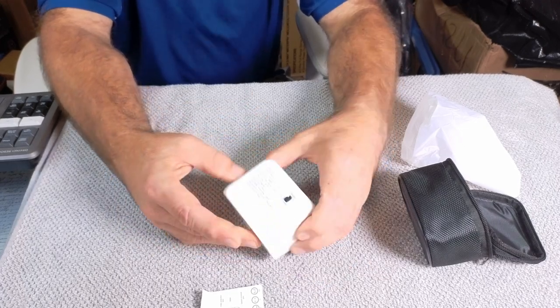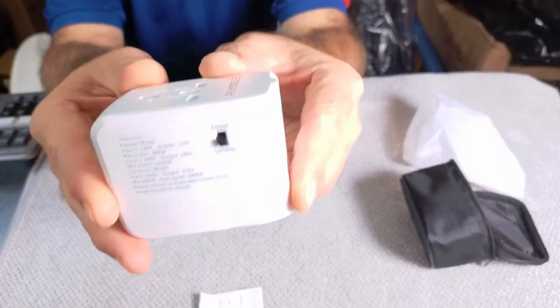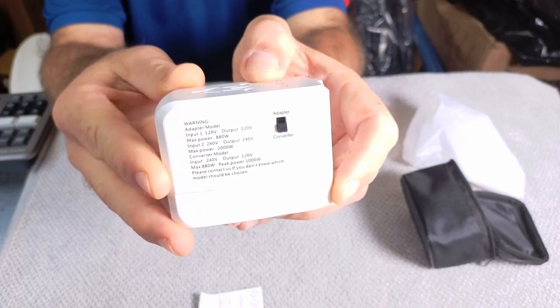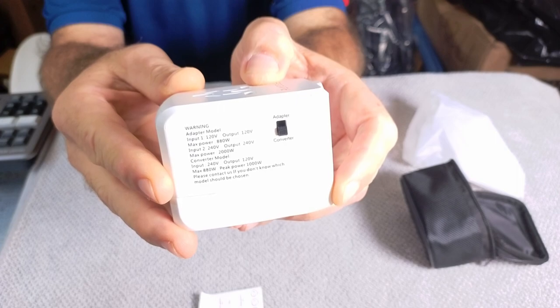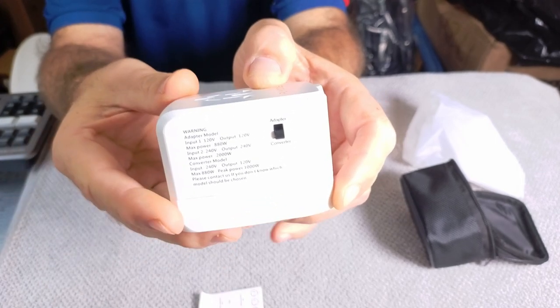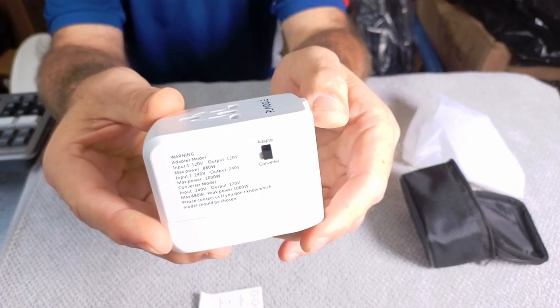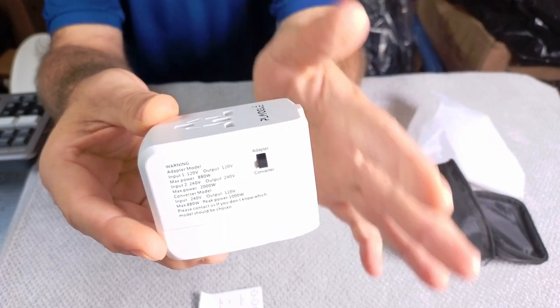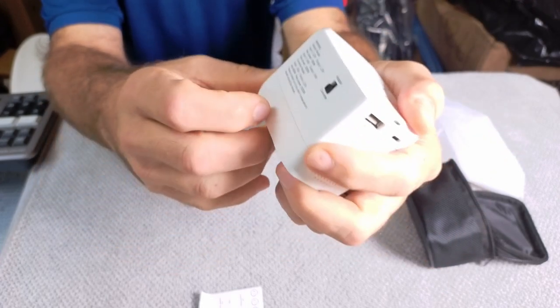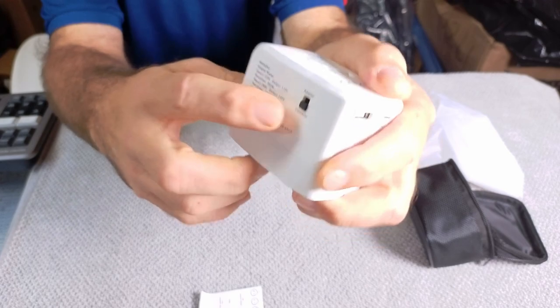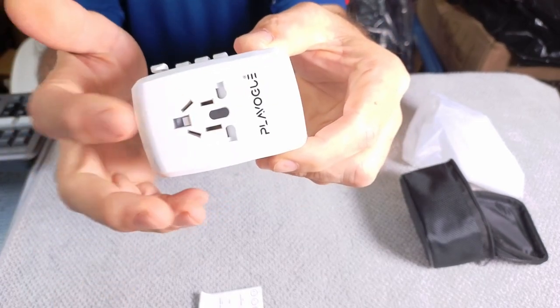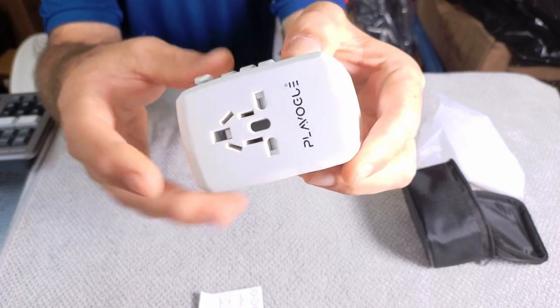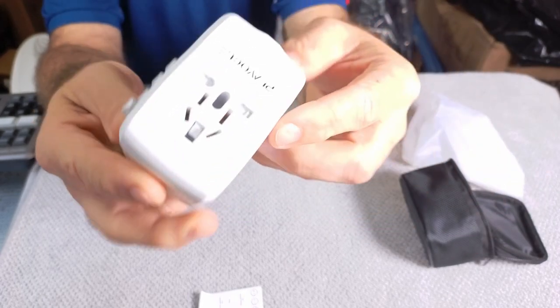Now another cool feature about this, if you look on the side right here, you can see that it has a converter mode and an adapter mode. If you're in the adapter mode, it's going to have 120 volts going in, 120 volts coming out. If you're in a country where their primary power is 220 volts, then you can just put this in converter mode and it's going to take that 220 and step it down to 120 for your 120 volt devices. Very cool. Very handy.